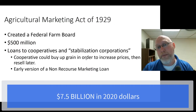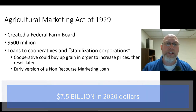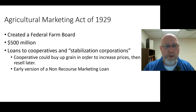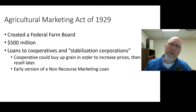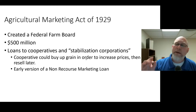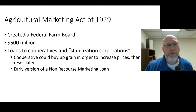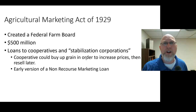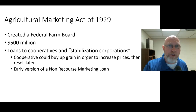The government lent money to agricultural cooperatives and stabilization corporations — these are private organizations that are not government-controlled. They got access to inexpensive, low-interest government loans for the express purpose of buying up grain to increase prices, with the hopes they could resell it later.